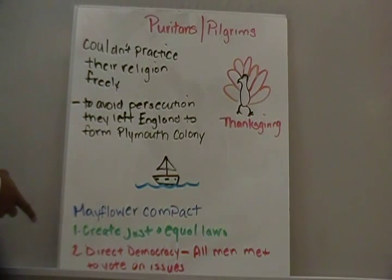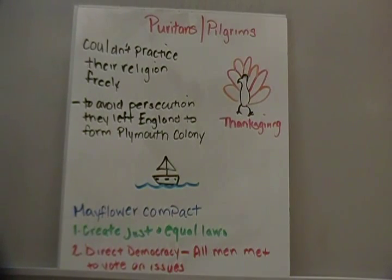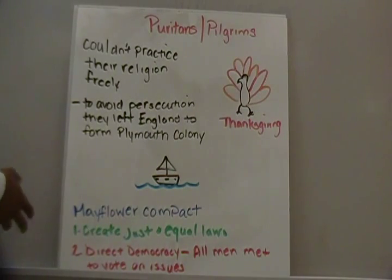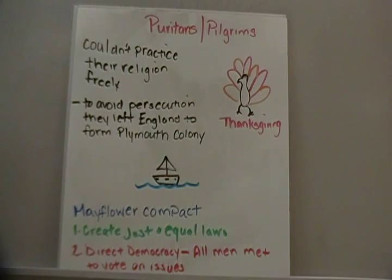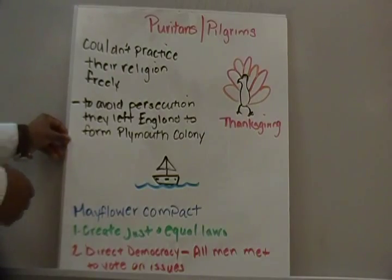The Mayflower Compact was different in that it was a form of direct democracy. All the men who came over on the Mayflower had the power. They would meet in what we call a town hall meeting — gathering in a central location to discuss and vote on issues that impacted everybody. As more and more men came, they all got to participate in direct democracy. They would all discuss the issues that would affect Plymouth Colony. With direct democracy, all men met and could vote — women were not allowed to vote or make decisions.